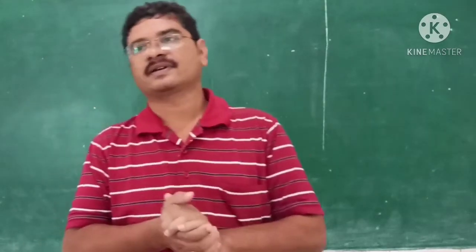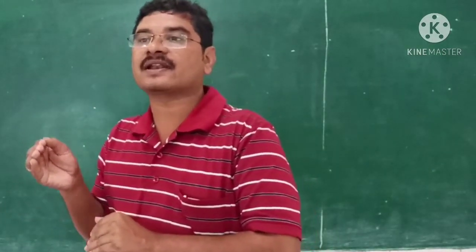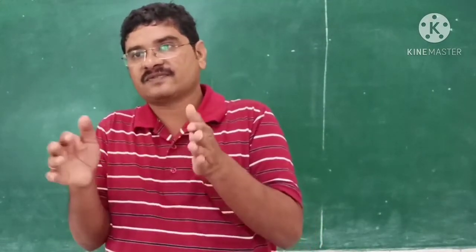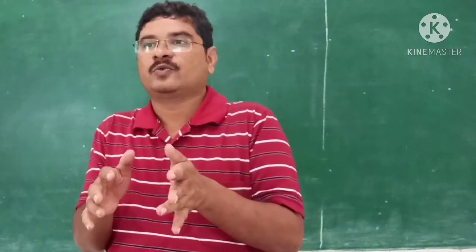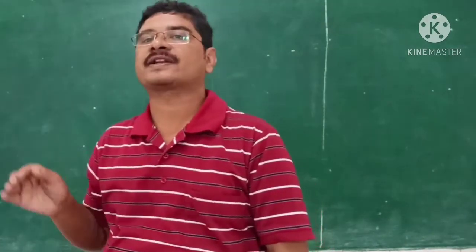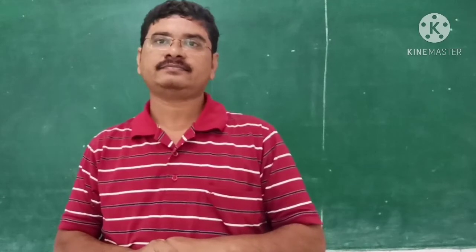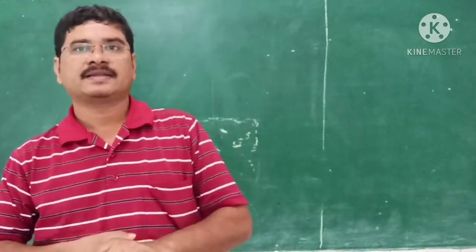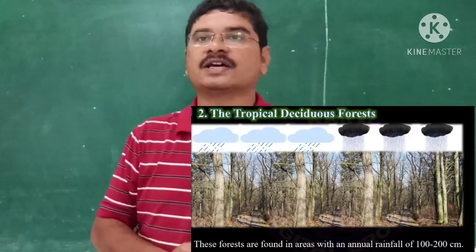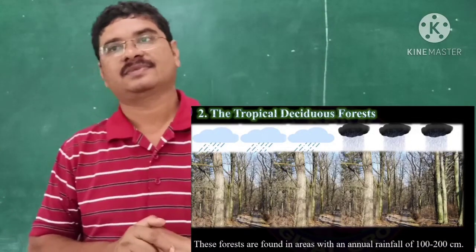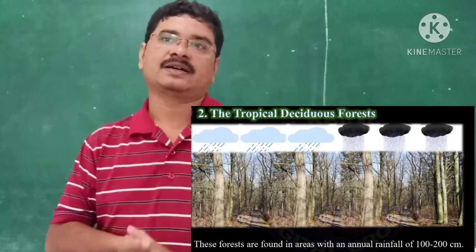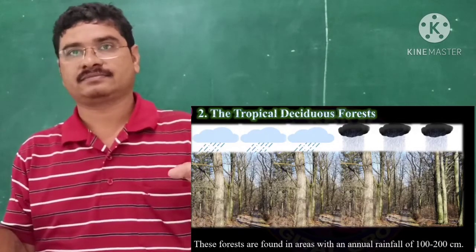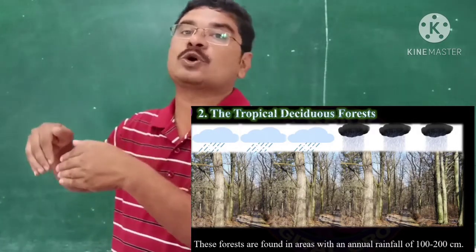These forests are found in areas with an annual rainfall of 100 to 200 centimeters. The other most important type are the tropical deciduous forests. They occupy a wide area, largely on the eastern slopes of the Western Ghats.